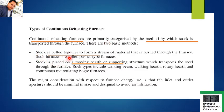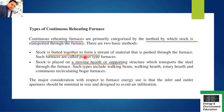There are two methods by which stock can be transported through the furnace. The first method is that the stock is butted together to form a stream of material that is pushed through the furnace - all stocks are placed in a single frame, butted together, pushed inside the furnace, and heated. Such furnaces are called pusher type furnaces. The second method is that the stock is placed on a moving hearth - here, the hearth is moving, and one end charges the stock while the other end discharges it.